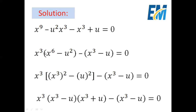So the equation becomes x cubed times (x to the power 6 minus u squared) minus (x cubed minus u) equals 0. We write x to the power 6 as (x cubed) squared, giving us a squared minus b squared form. The factorized form of a squared minus b squared is (a minus b)(a plus b), where a is x cubed and b is u. So we get x cubed times (x cubed minus u)(x cubed plus u) minus (x cubed minus u) equals 0.